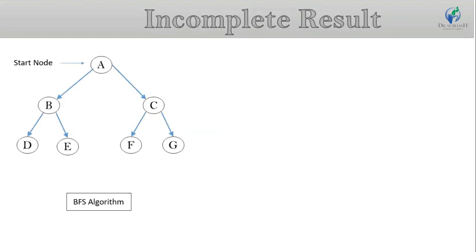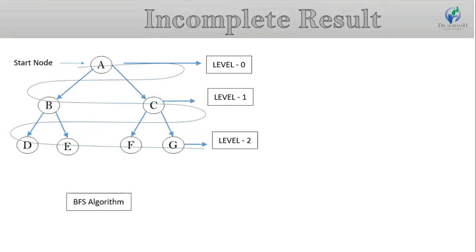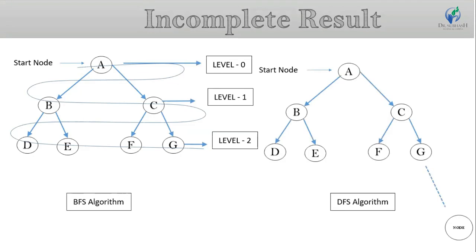Next point: DFS provides incomplete results. We have seen that BFS searches level by level, so it 100% covers all the nodes in the tree or graph. But DFS searches along the path node. So suppose we have an infinite search space in the problem or a loop in the problem — DFS algorithm cannot complete visiting all the nodes, or we can say it may follow the wrong direction.